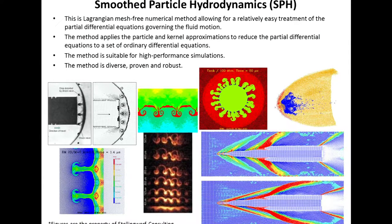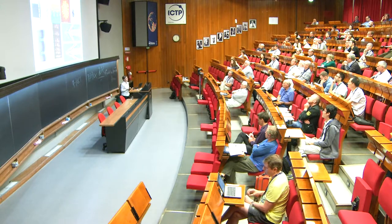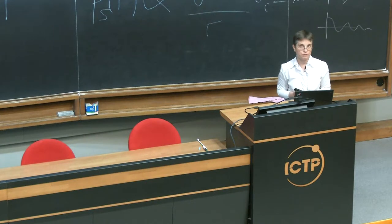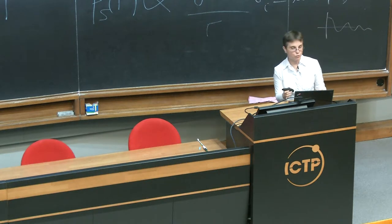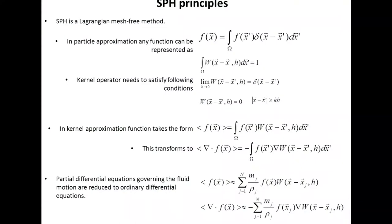The smooth particle hydrodynamic simulations use a Lagrangian mesh-free numerical method that allows relatively easy treatment of the PDEs governing fluid motion. It is neither a purely particle method nor a continuous method — it partitions the flow field and produces fluid motion as motion of particles. The method applies particle and kernel approximation to reduce PDEs to a set of ordinary differential equations, making them much easier to integrate. The method is in principle suitable for high-performance simulations and is proven and robust. The SPH principle: in the particle approximation, any function can be represented and derivatives calculated by replacing the delta function with a kernel operator.